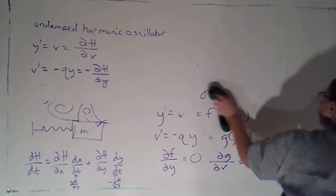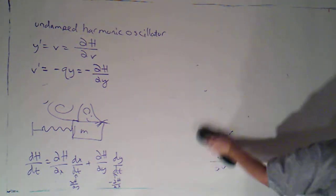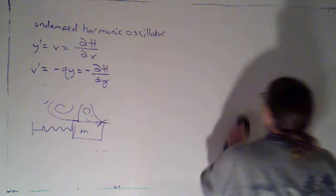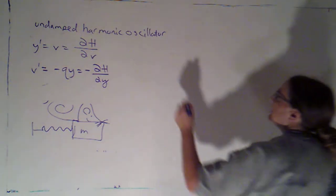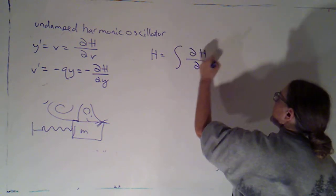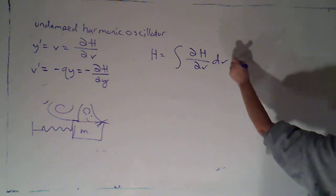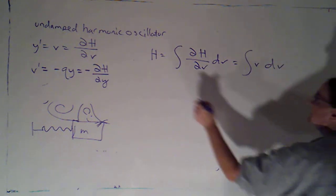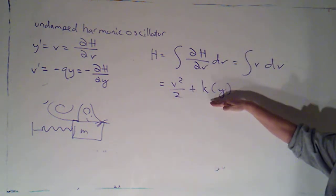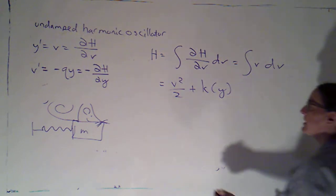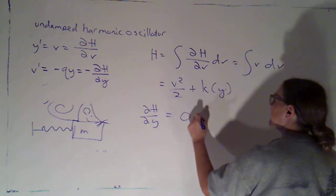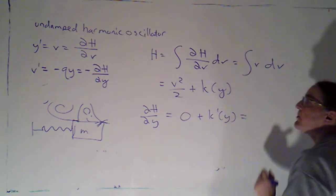So, if I want to find my Hamiltonian function, I can certainly do that. I'm going to say h is the integral of the partial of h with respect to v, integrating that with respect to v. So, that's going to be the integral of v dv, which is just v squared over 2 plus k of y, plus an arbitrary constant with respect to v.